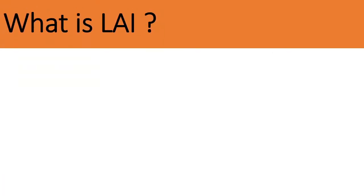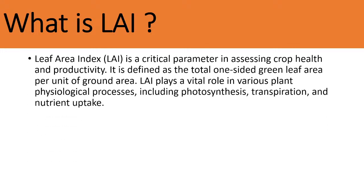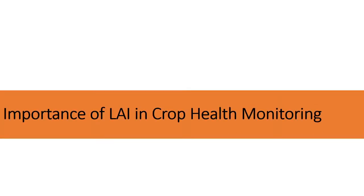First of all, what is LAI? LAI stands for Leaf Area Index. It is a critical parameter in assessing crop profile and productivity. It is defined as the total one-sided green leaf area per unit of ground area, and it plays a vital role in various plant physiological processes including photosynthesis, transpiration, and nutrient uptake.